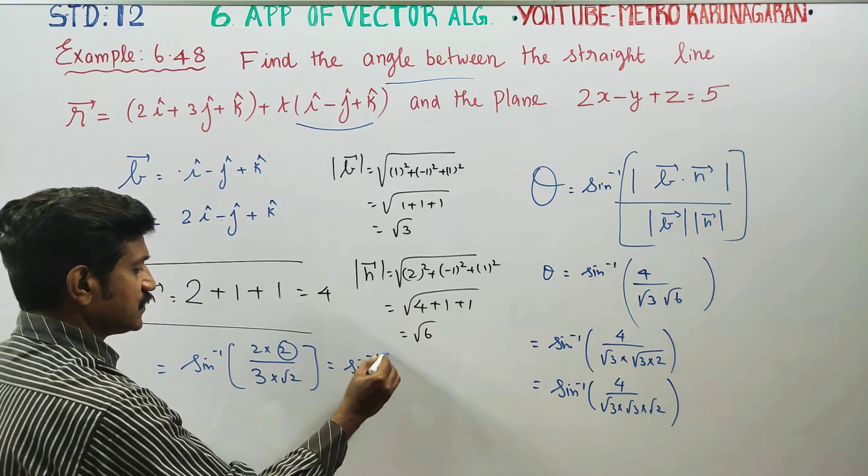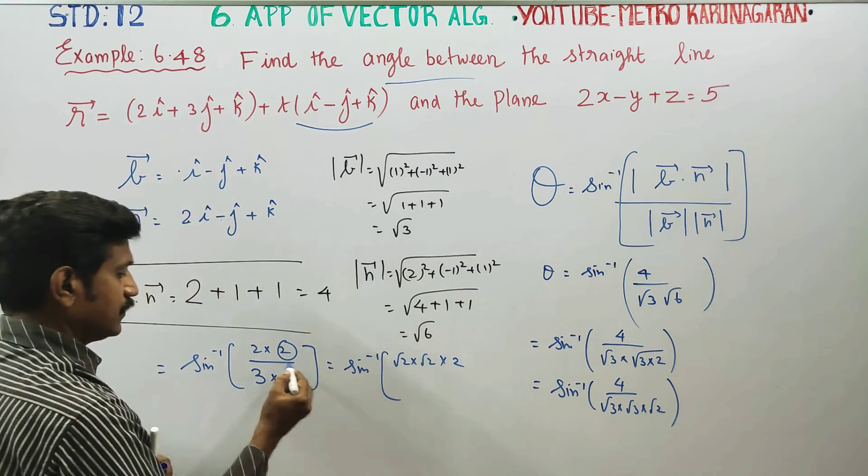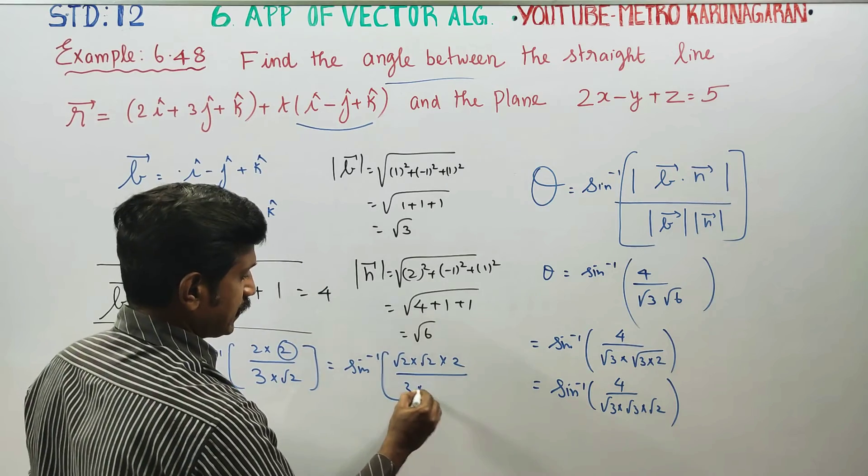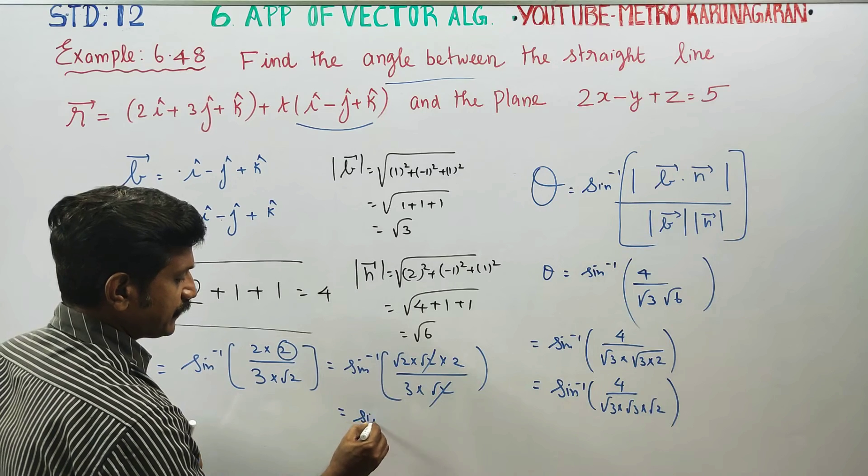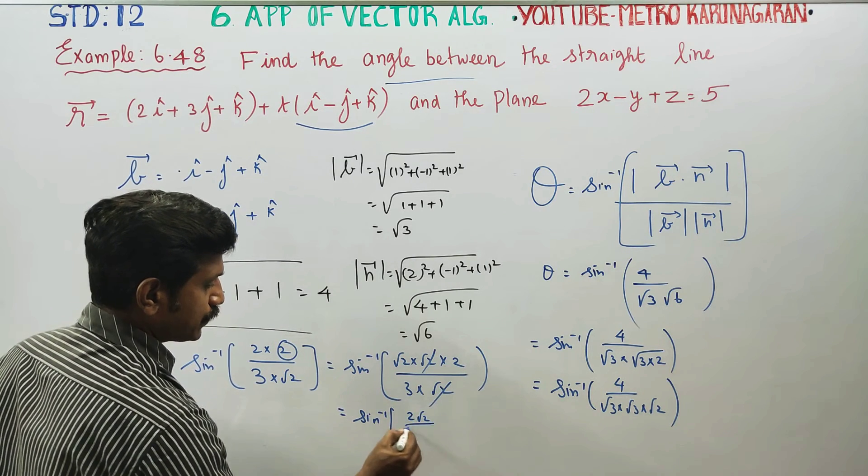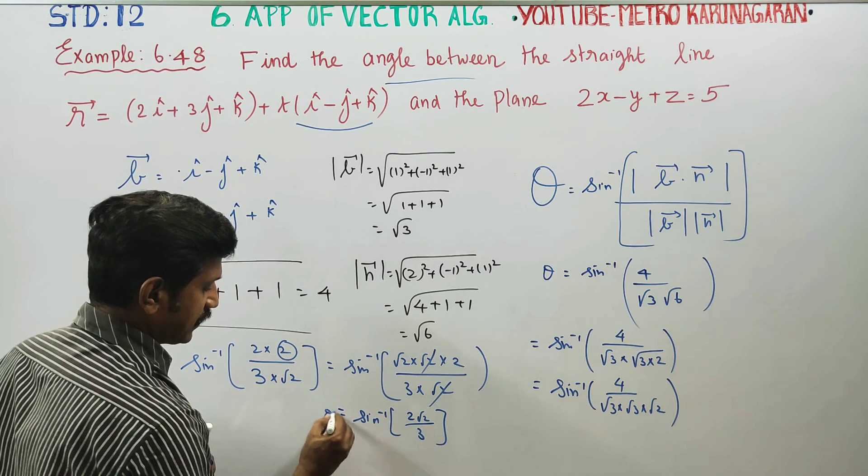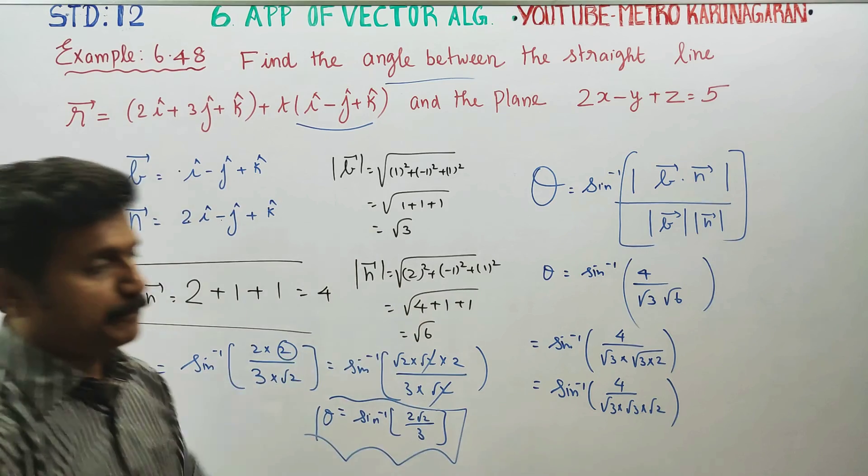Sin inverse of 2 into 2 by 3 into root 2. This is root 2. Cancel it. Your final answer will be sin inverse of 2 root 2 by 3 is your final answer. This is the angle between the line and the plane.